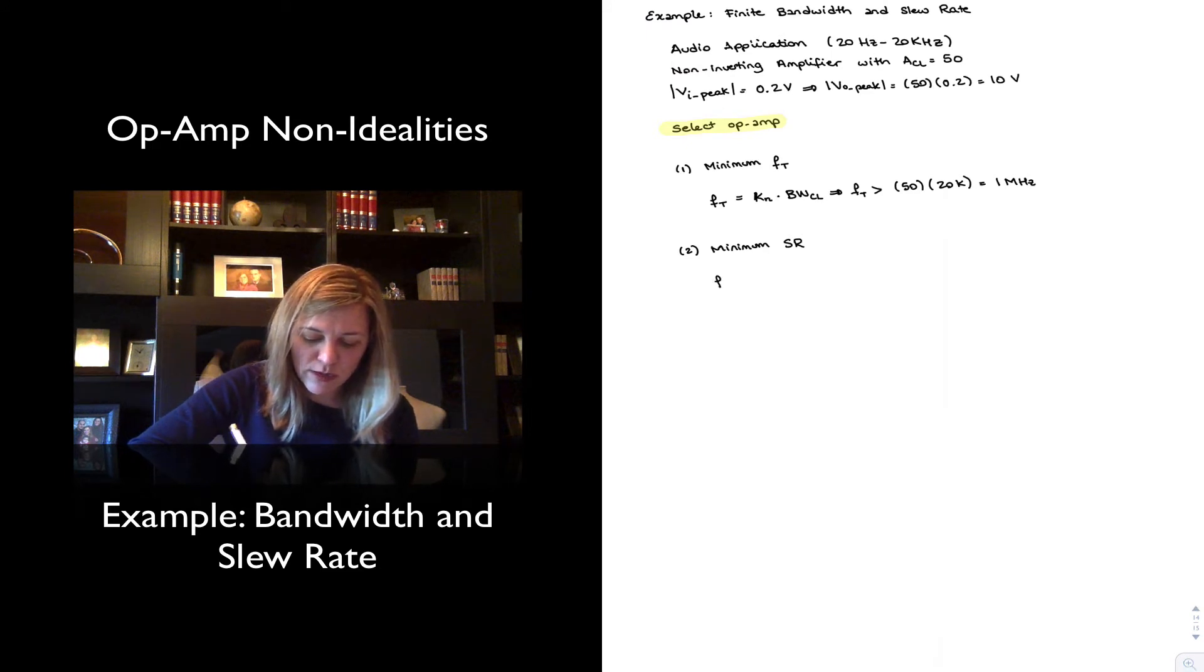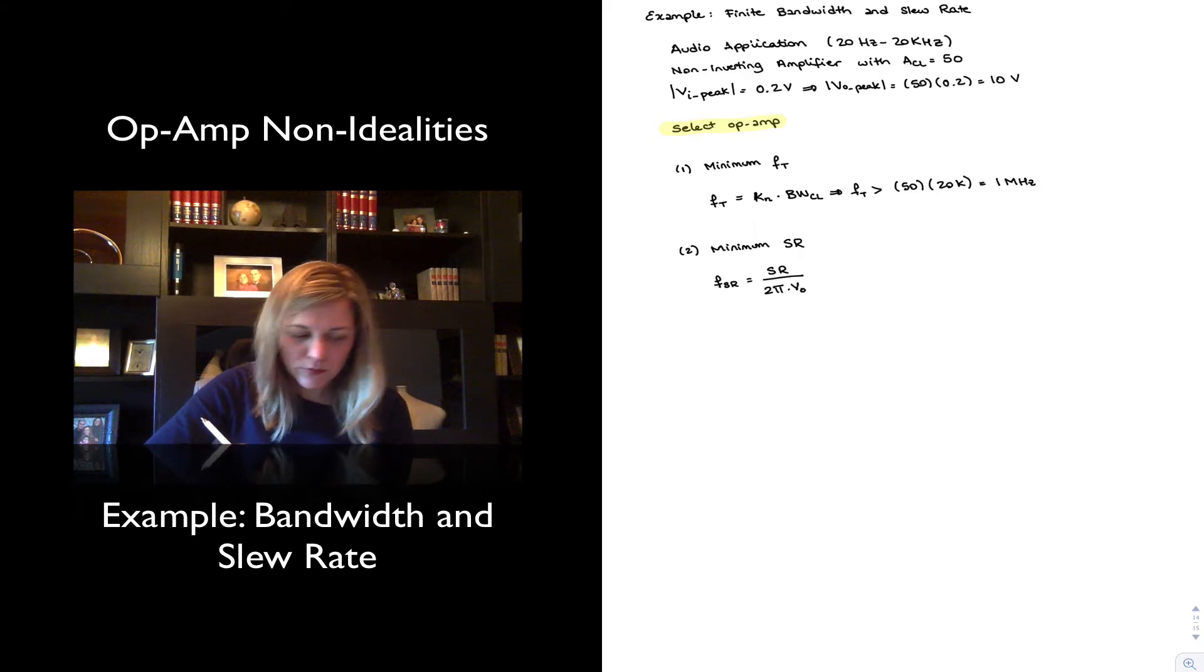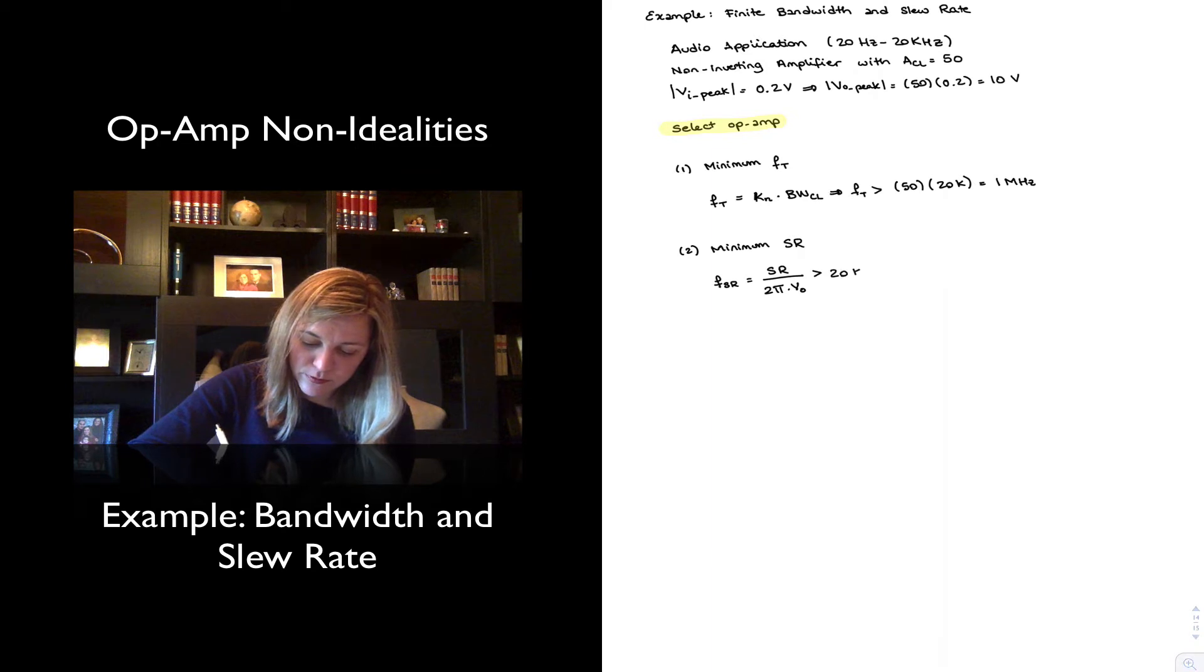And so I want my fSR, which is equal to the slew rate divided by 2π times V output, we want that to be greater than 20 kilohertz. And so I can solve for my slew rate.